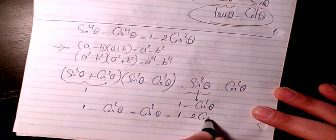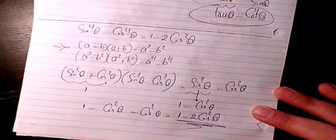So it will be 1 minus 2 cosine squared theta. That's going to be the answer.